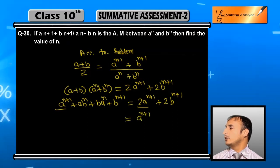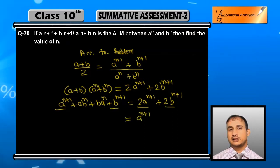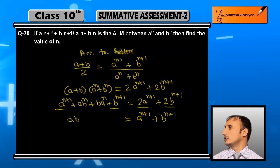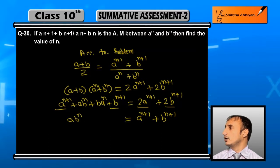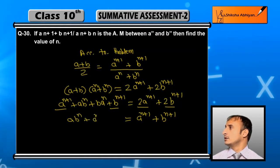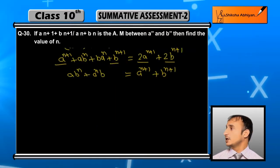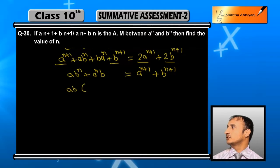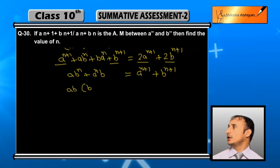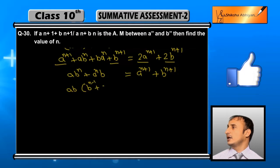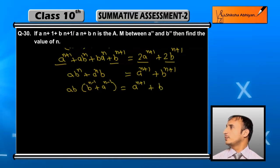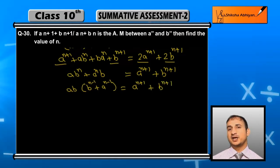Now 2a^(n+1) minus a^(n+1) leaves a^(n+1), and 2b^(n+1) minus b^(n+1) leaves b^(n+1). So we get: ab^n + ba^n = a^(n+1) + b^(n+1). Taking ab common from the left side: ab(b^(n-1) + a^(n-1)) = a^(n+1) + b^(n+1).